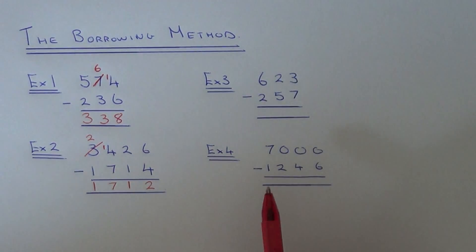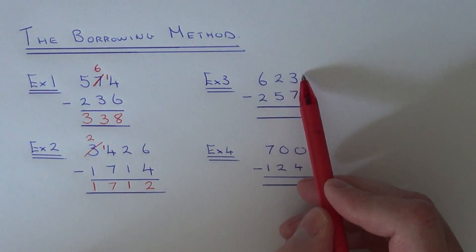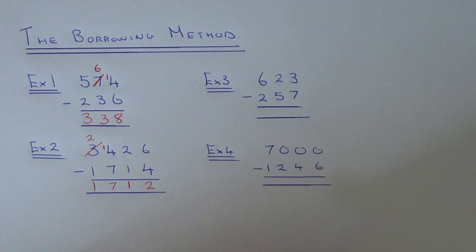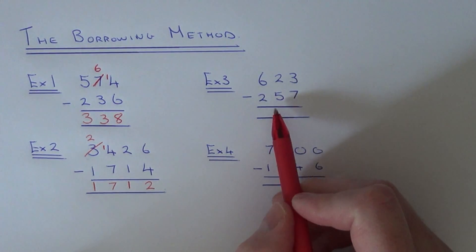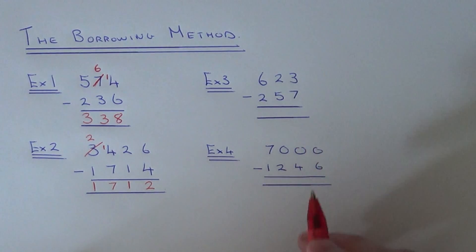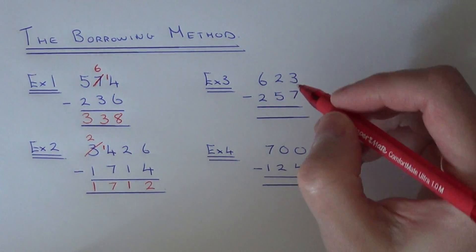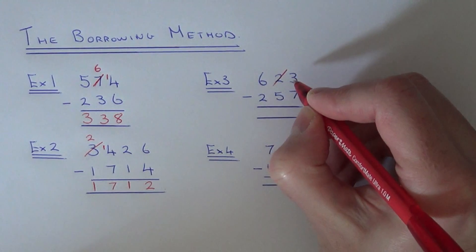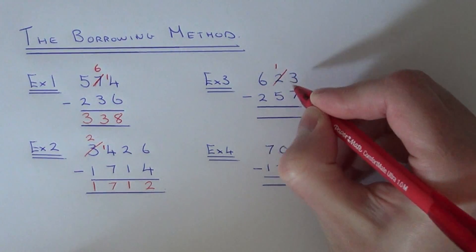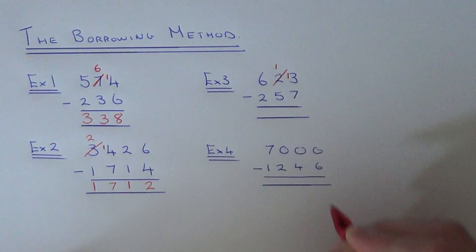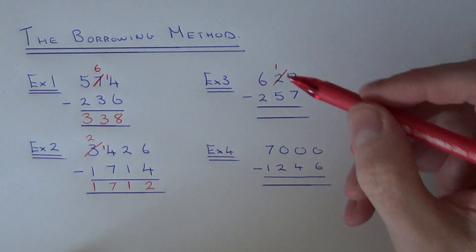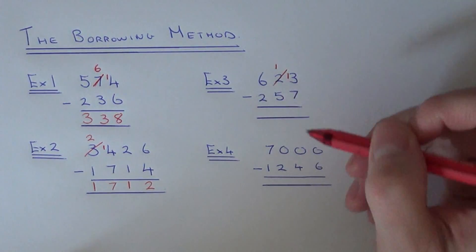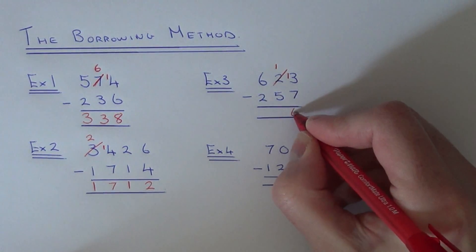Let's move on to example 3. This time we have 623 minus 257. Start on your right hand side: 3 take away 7. Well, you can't do that, so we need to go next door and borrow. Borrow 1 off the 2, make that a 1, and pass the 1 in front of the 3 to make it 13. So if you do 13 take away 7, that gives 6.